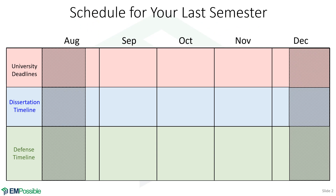Here is a schedule for somebody who would like to graduate in the fall semester. The parts that are hashed out are actually parts of the month that technically are not part of the semester. A fall semester would start maybe late August, go through September, October, November, and end somewhere in early December.